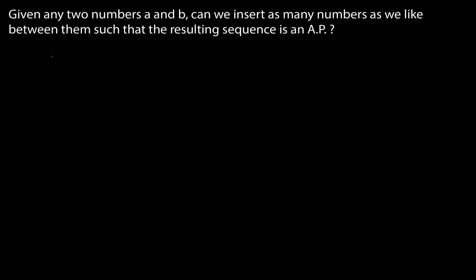Welcome everyone. We have been studying arithmetic progression for quite some time, so let's play a bit with it using all our knowledge. Given any two numbers a and b, can we insert as many numbers as we like between them such that the resulting sequence is an AP? For example, take any two numbers like 3 and 24.